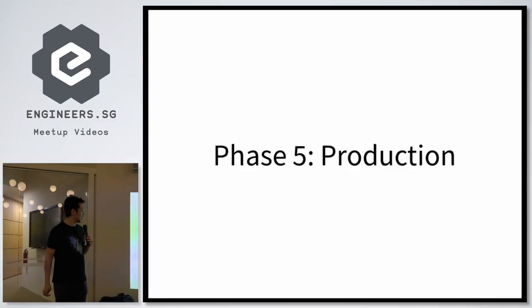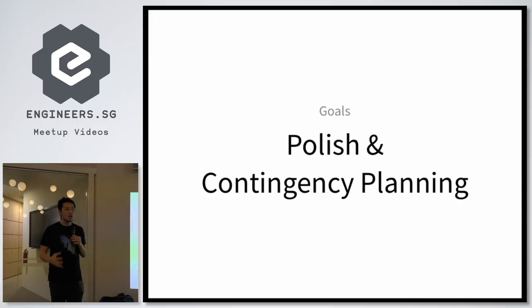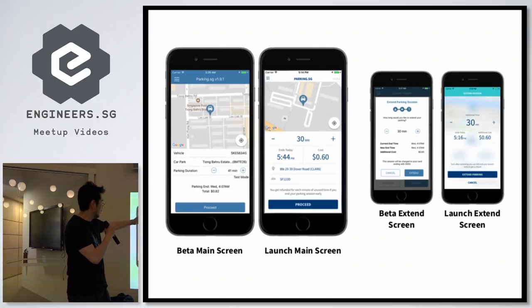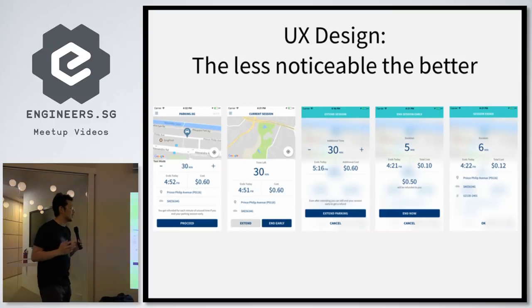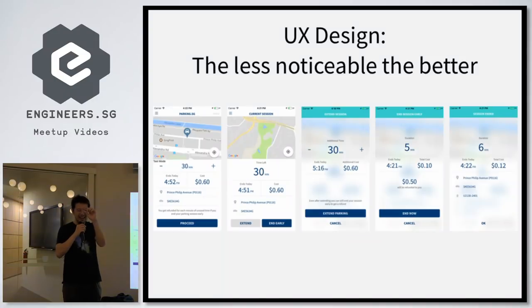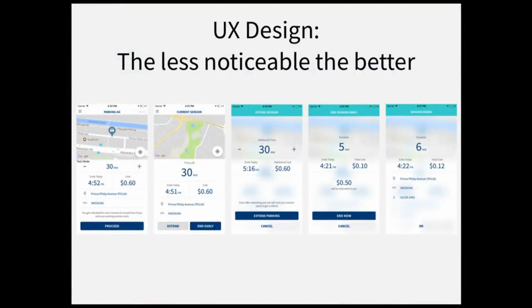Which brings us finally to phase five: production. Production is about polish and contingency planning — making sure you don't trip up on anything on the way to launch. A big part of that is having a good UI. You go from your beta design to our final launch UI, which fundamentally had the same functional components but was a lot simpler to use. The thing about UX design is that the less noticeable, the better. Amazon, Google, and Facebook are tech giants, and even they are a tiny part of your life — which means your little app solving a much smaller problem is a minuscule part of people's lives. People don't want to learn about your design philosophy — they just want your app to do the thing it's meant to do and let them move on.